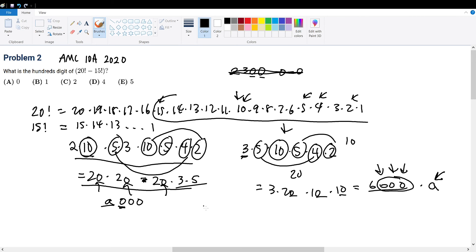So, therefore, this can become 0, 0, 0, some quantity, which is 20 factorial, minus 15 factorial, which is some quantity, but ending in three zeros. Hence, 0 minus 0 will give 0. So our solution will be answer choice A.